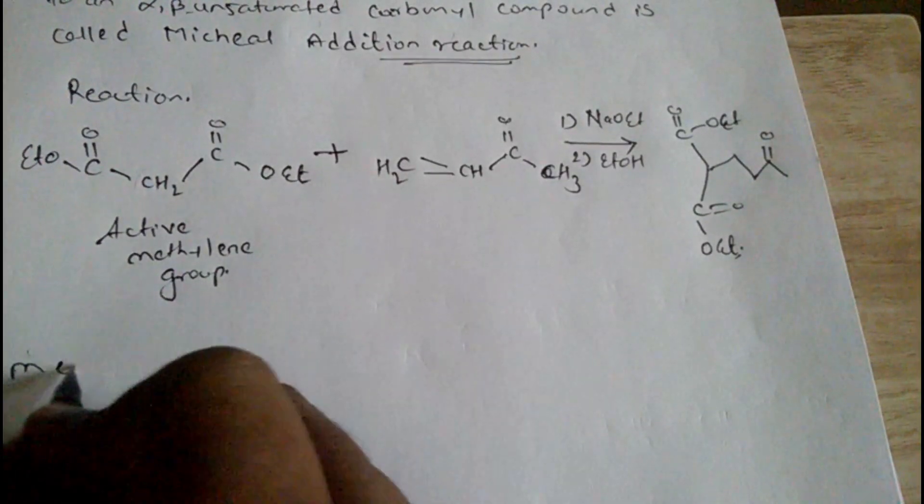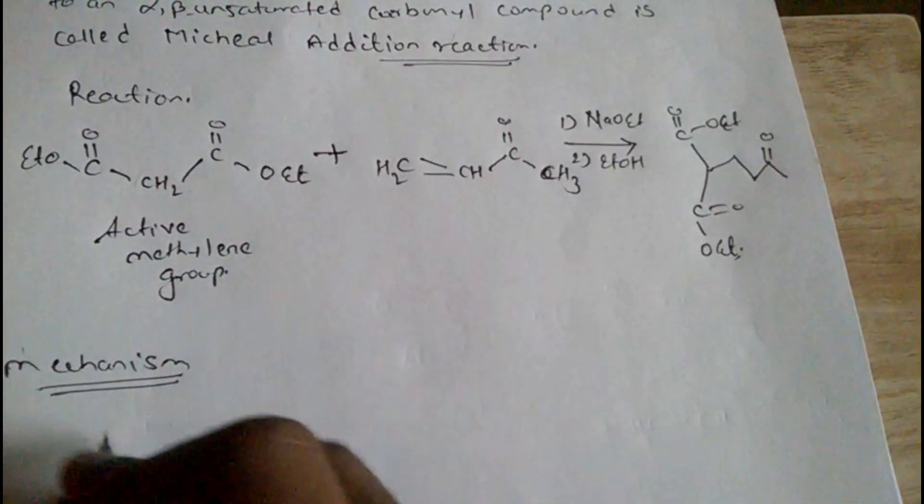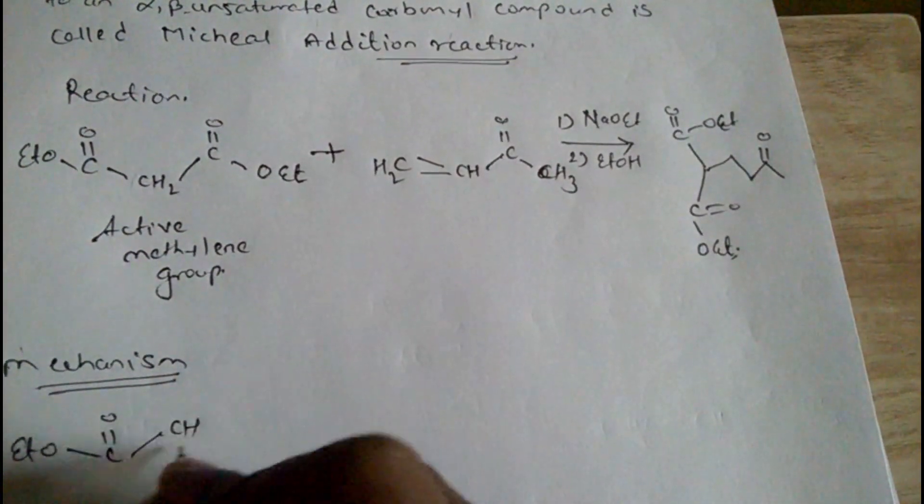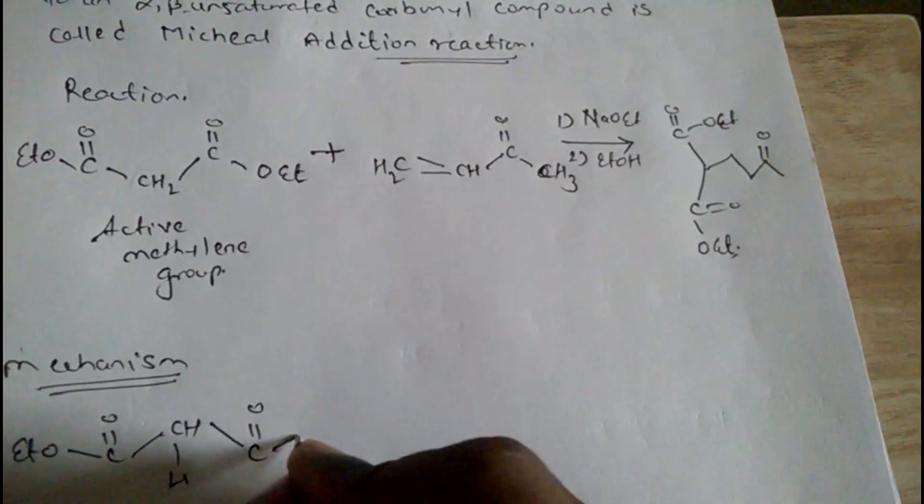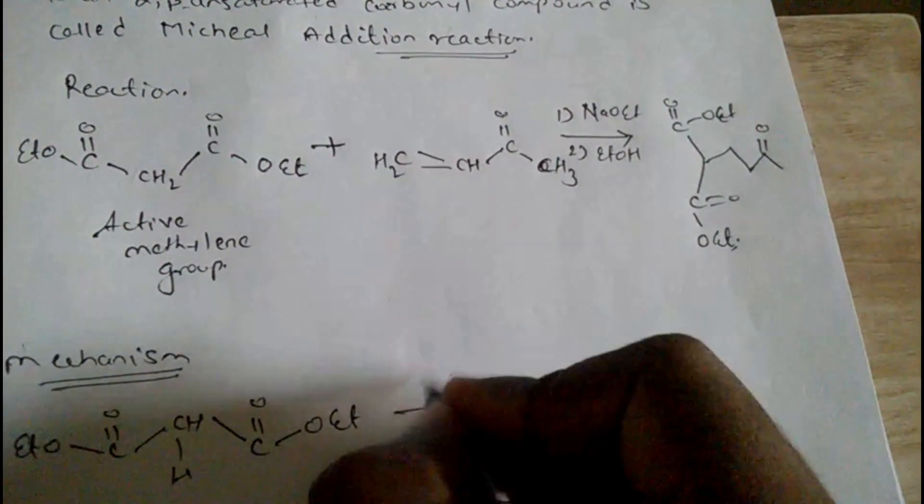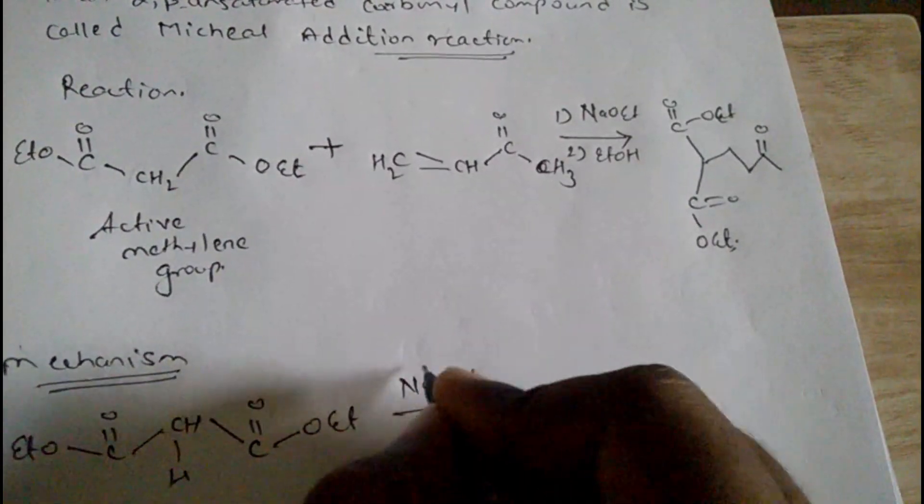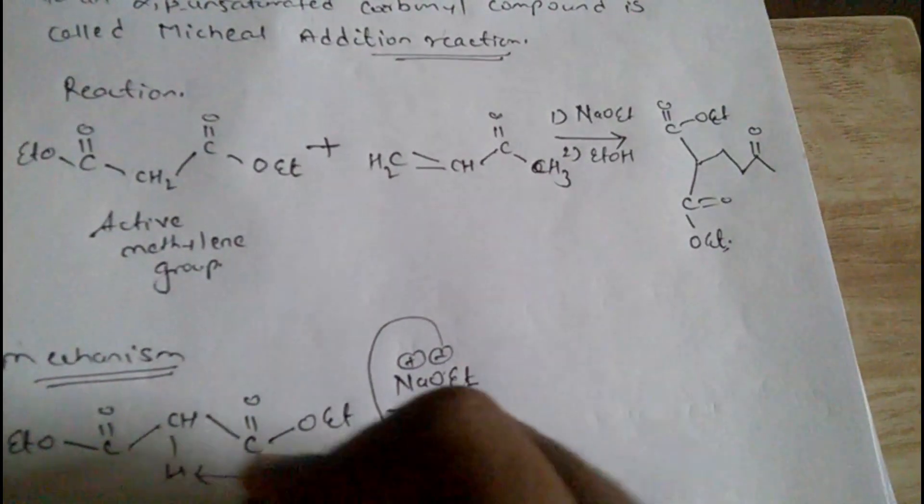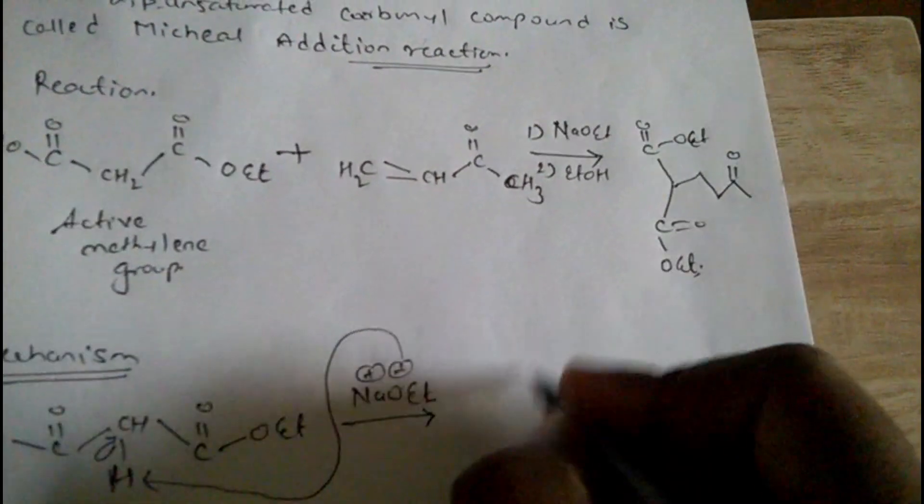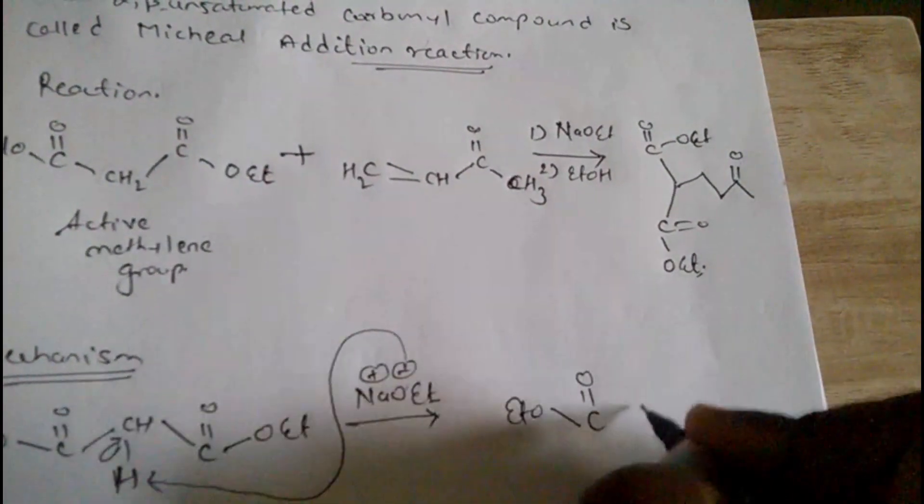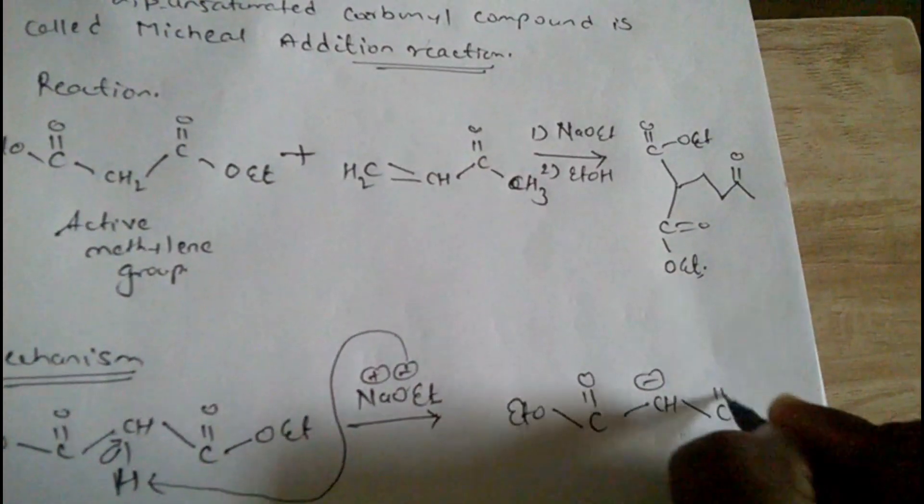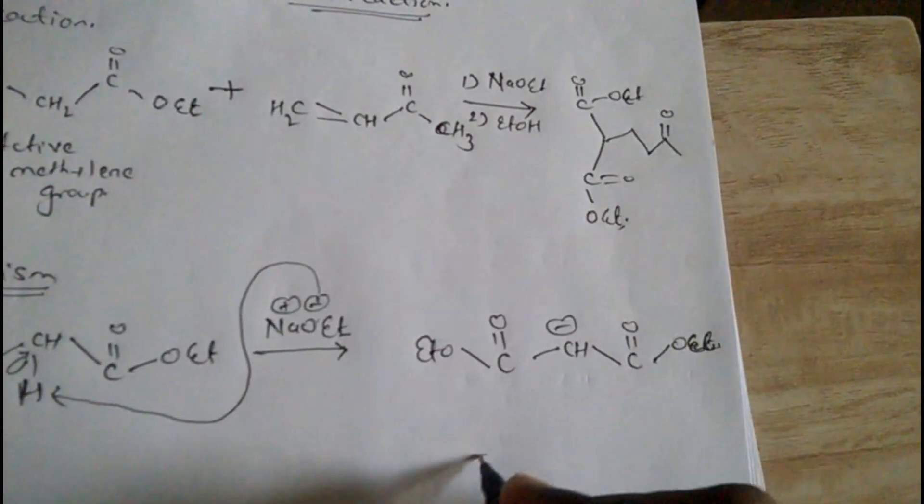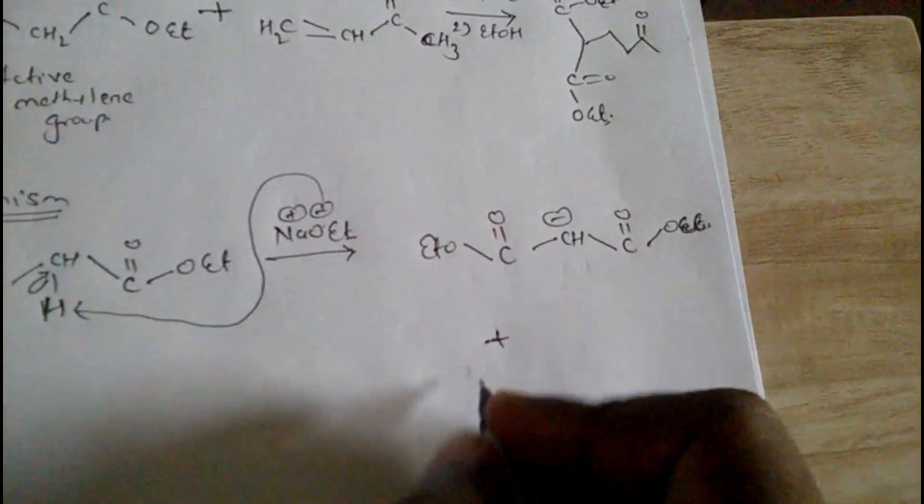Let's see the mechanism. First it is treated with sodium ethoxide, Na⁺ OEt⁻. This negative charge will accept this hydrogen and this bond will shift towards the carbon. And we get a structure CH negative.